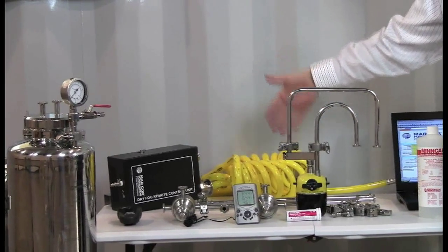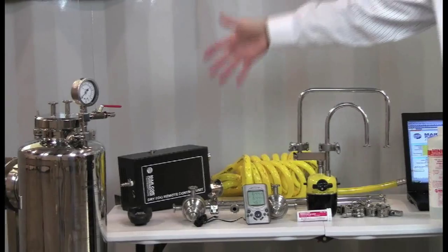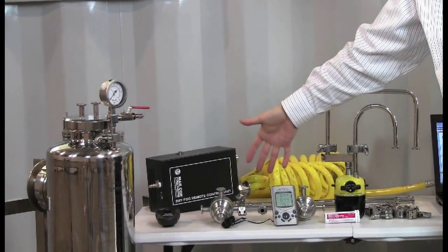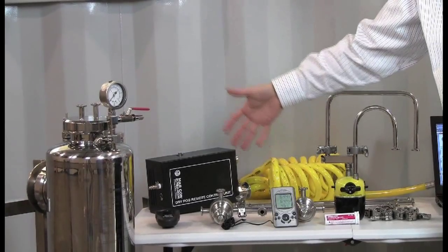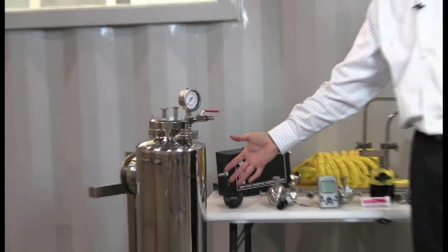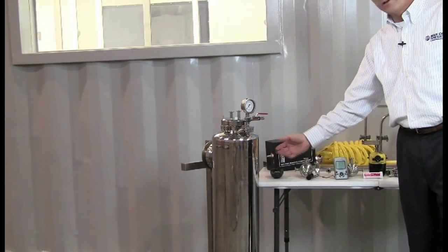Dry fog remote to turn the unit on and off when you're outside the clean room. Compressed air connections, different connections and piping. Regulator to regulate the compressed air to the tank as well as to the head. And the dry fog machine tank itself, which utilizes MinCare, water and compressed air.